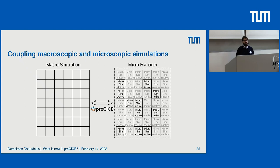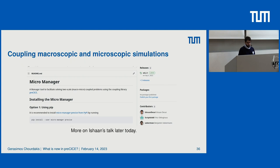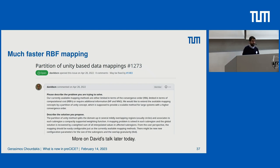Other big features coming: one is the coupling of macro and micro simulations. You may have heard about a micromanager — not someone micromanaging work, but a piece of software starting and stopping micro simulations of a macroscopic problem. Ishan will talk about this later today. The good news is that it is very actively developed and there are already 0.x releases. Another large feature coming is much faster radial basis function mapping implementing a partition of unity concept — David will talk about it later today.